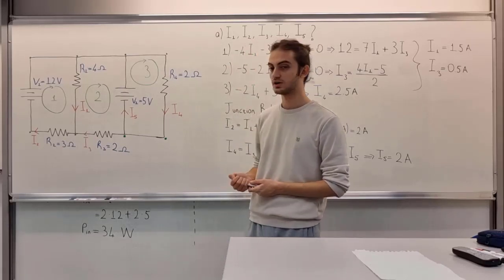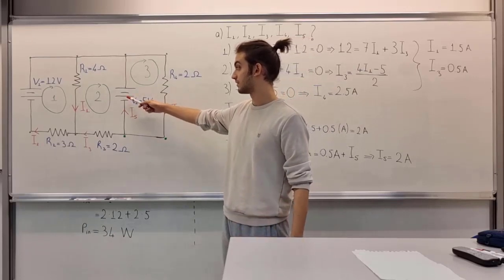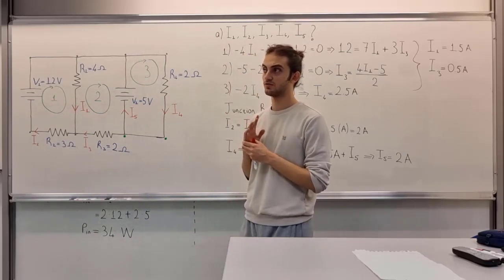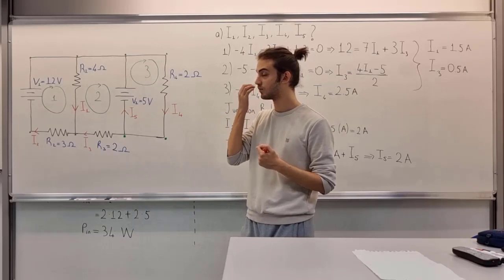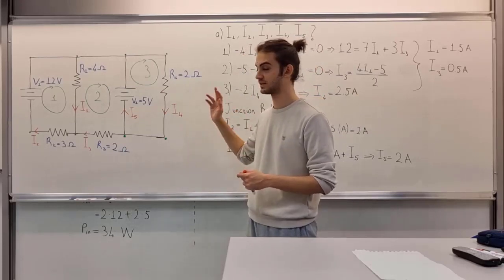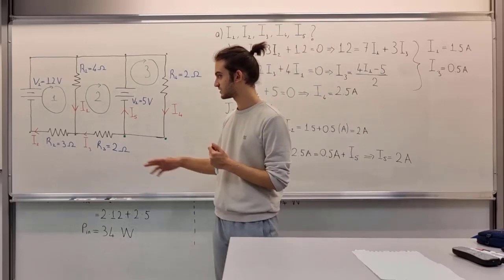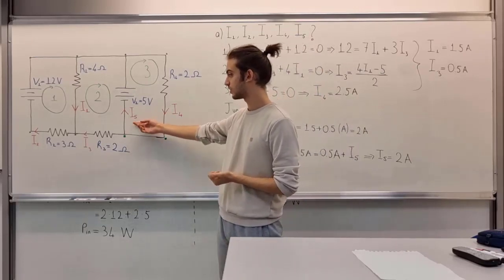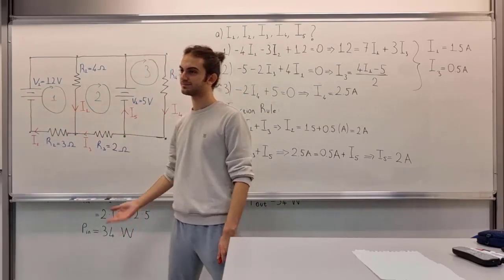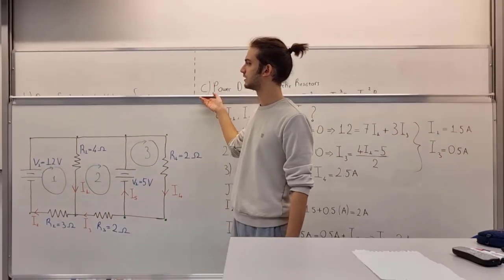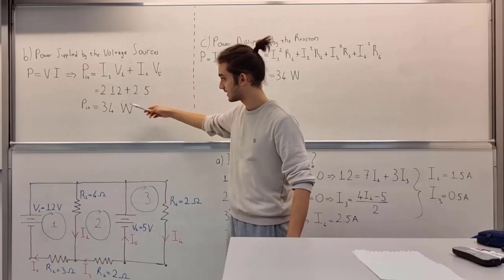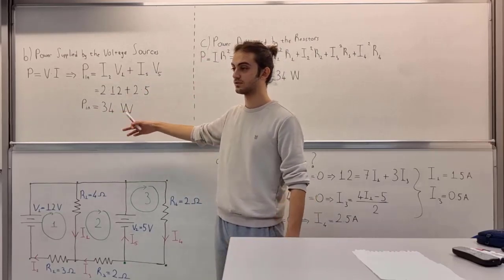Option B - we need to find the power supplied by the voltage sources. What should I do? Remember that we have the formula for voltage sources: power equals voltage times current passing through that voltage supplier. As you can see on the figure, we have current I5 going through this voltage supplier 2 and current I2 going through this voltage supplier 1. We simplify, power in equals this, and we find that power in equals 34 watts.